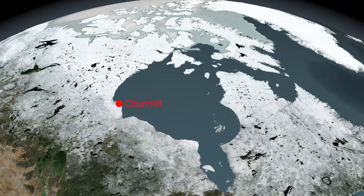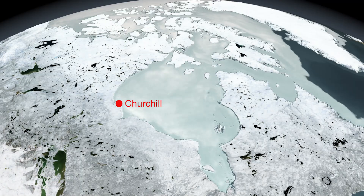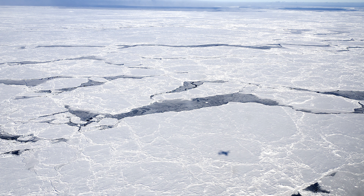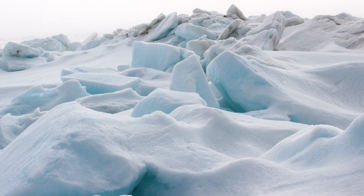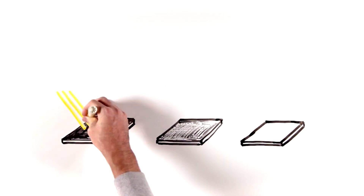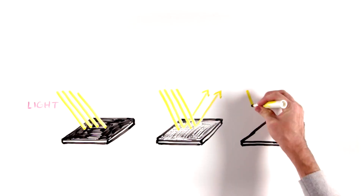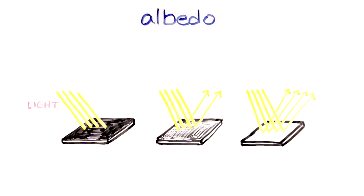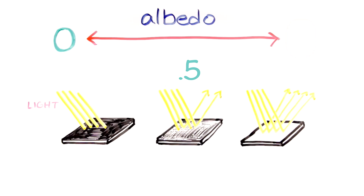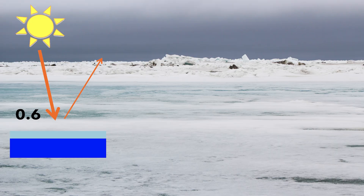The nearby Hudson Bay has sea ice on it during winter. Sea ice is bright, white, and reflective. The high reflectivity of sea ice means that it has a high albedo, which is simply a measure of the reflectivity of a surface. For example, if a surface reflects 50% of the sunlight that hits it, then that surface has an albedo of 0.5. Albedo ranges from zero, which is reflecting no incoming sunlight, to one, reflecting all incoming sunlight. The albedo of sea ice is about 0.6 on average.